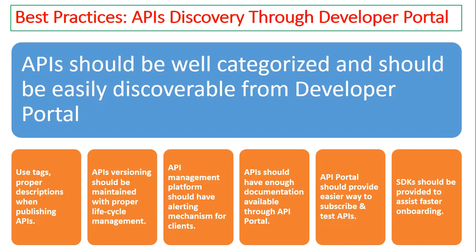Another important point is API versioning — you should maintain proper versioning with proper lifecycle management. It's very important that you don't deprecate APIs or move their lifecycle abruptly. It should be well organized, communicated well, and clients should be informed. When a new version is available, don't simply deprecate and unpublish the previously deployed version immediately. Keep it for a certain time, monitor the patterns and trends of clients moving to the new version, and only once you're confident the new version is fulfilling all needs should you deprecate the old version with proper communication and alerts to clients.